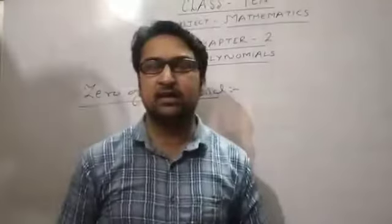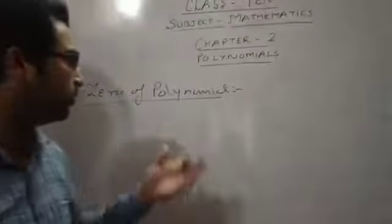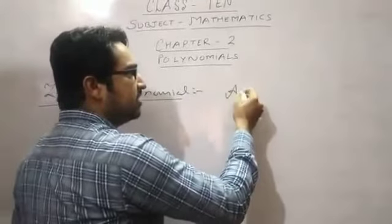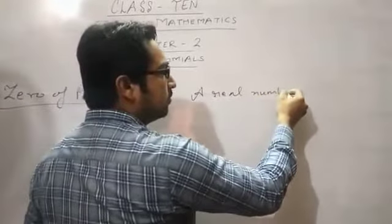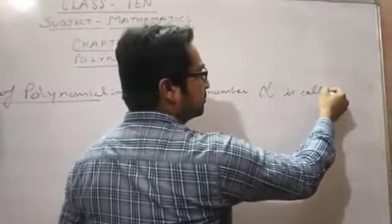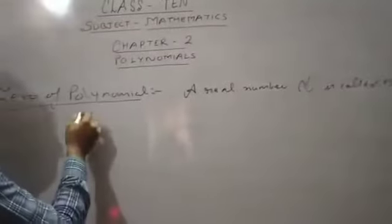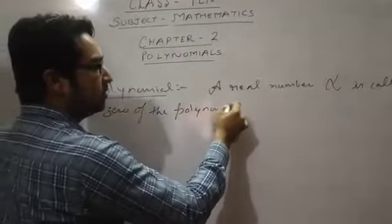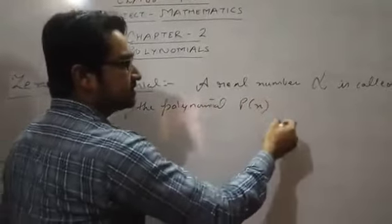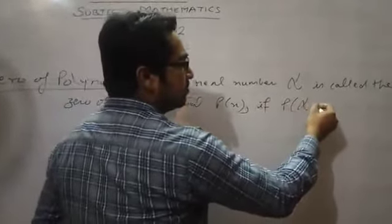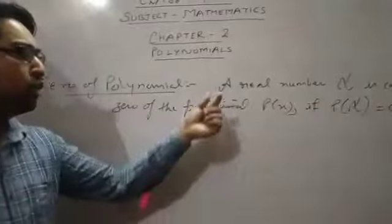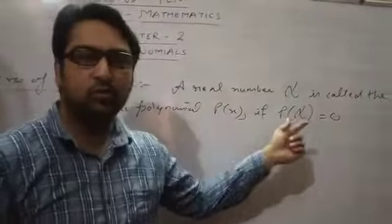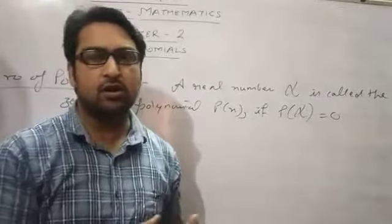You have studied in the earlier class, that is in class 9th, about the zero of the polynomial. A real number alpha is called the zero of the polynomial P(x) if P(alpha) is equal to zero. This means that if we put alpha in place of x in the polynomial P(x), the result is zero.